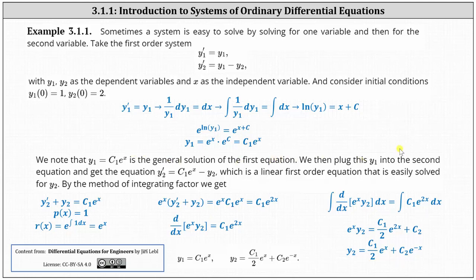Now we plug y1 into the second equation, and we get the equation y2 prime equals c1 e to the x minus y2, which is a linear first-order equation that we can solve using the method of an integrating factor. The first step is to add y2 to both sides of the equation. In this form, p of x is equal to 1, the coefficient of y2. Therefore, the integrating factor r of x is equal to e to the power of the integral of 1 dx, giving us r of x equals e to the x.